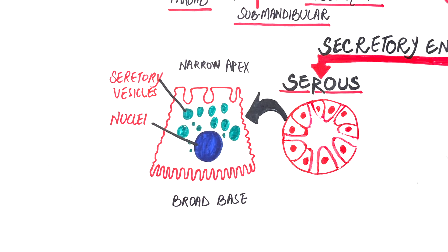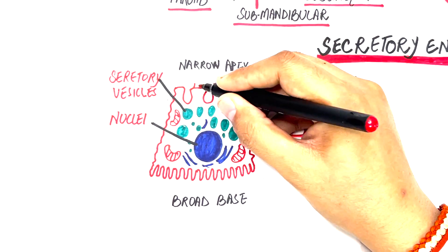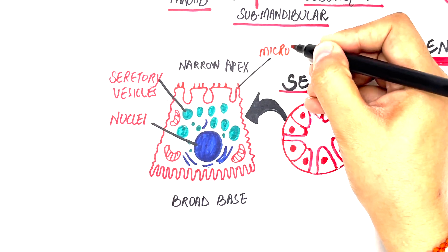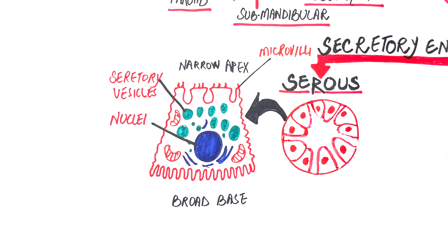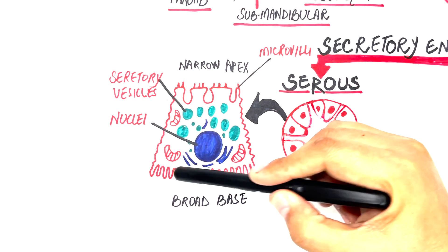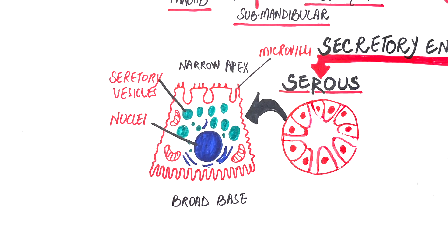Other organelles — including cytoskeletal components, mitochondria, lysosomes, and peroxisomes — are also observed in serous cells, just like in all other cells. Looking at the plasma membrane of the serous cells, it consists of many specialized parts. At the luminal or apical part, the plasma membrane is studded with a few short microvilli. The lateral and basal surfaces possess numerous folds that interdigitate with similar processes from adjacent cells, specifically to increase surface area.